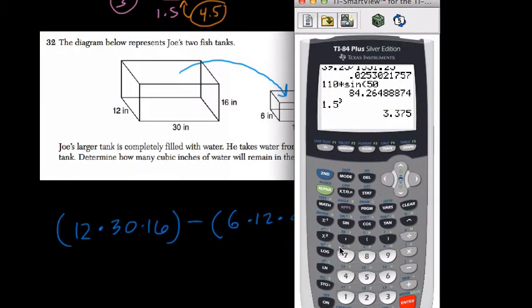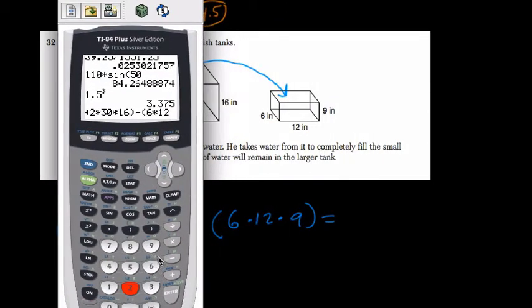So we can plug that in quickly. Parentheses, 12 times 30 times 16, close parentheses, minus parentheses, 6 times 12 times 9, close parentheses, and enter.